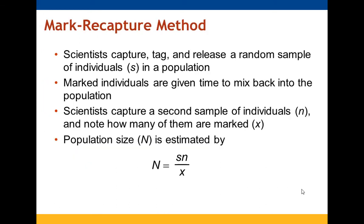Scientists will capture, tag, and then release some of the individuals present in the population. They give those individuals an opportunity to mix back in, then capture a second sample and identify how many of them were previously marked. They use that information to estimate population size by taking the product of the initial sample size and the second sample size, then dividing by the number that were marked.